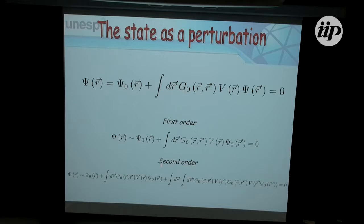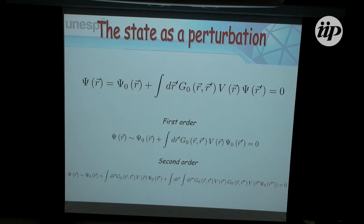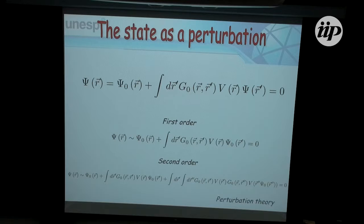I can do the next step: now I have an approximation for psi, I can plug it back into this equation with this new approximation and get a second-order term. So I get the original term and a second-order term, and you can continue this process onwards and onwards in principle. If V is small, then what you have is perturbation theory — the first correction depends on V, the second depends on V², and so on.